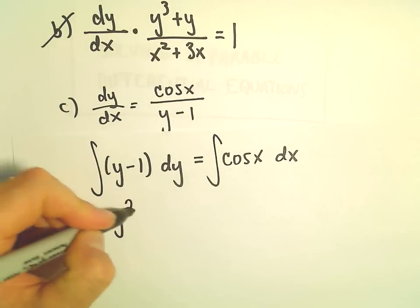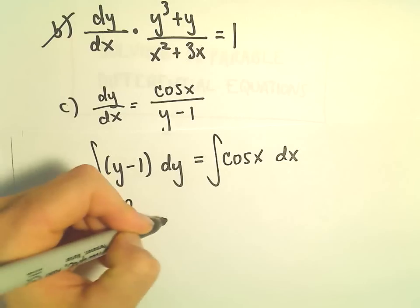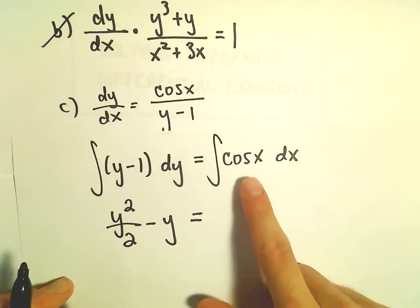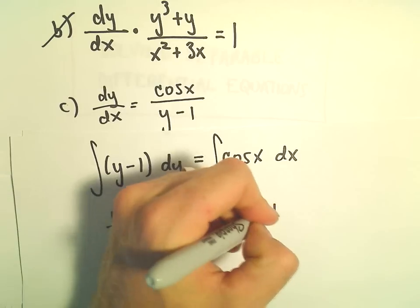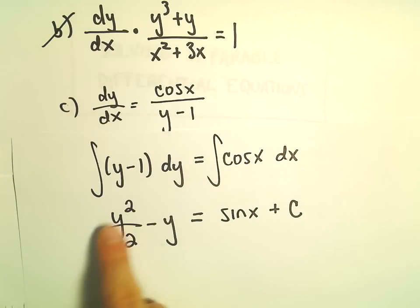So, on the left, we'll be left with y squared over 2 minus y. On the right side, the antiderivative of cosine x will be sine x. I'm going to stick our plus c on that side.